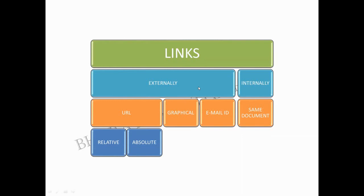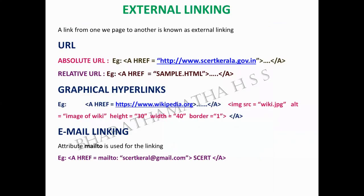External linking can be done in three ways: relative URL, absolute URL, and email linking. Absolute URL means giving the exact site address itself.